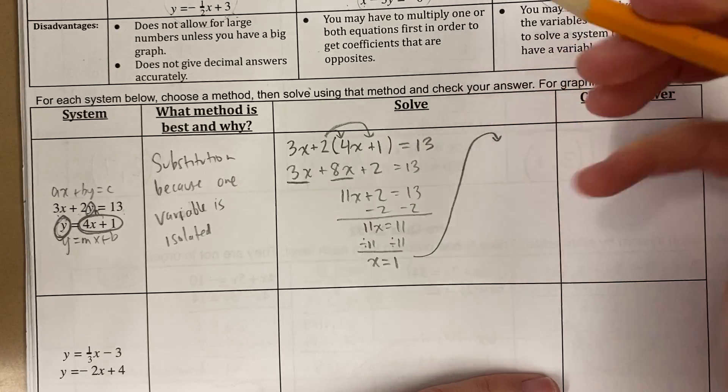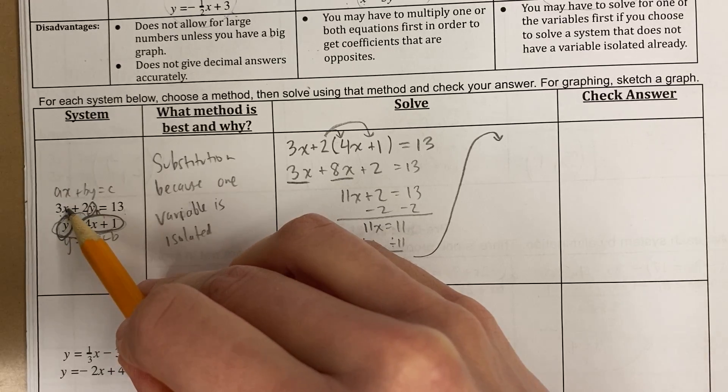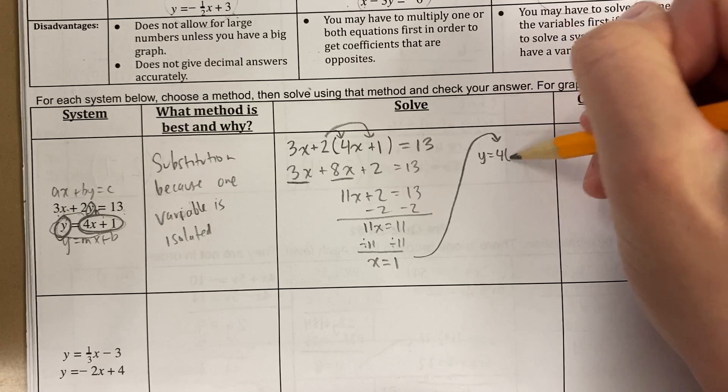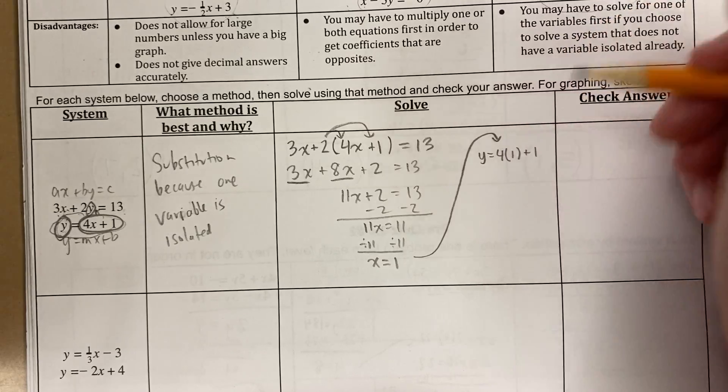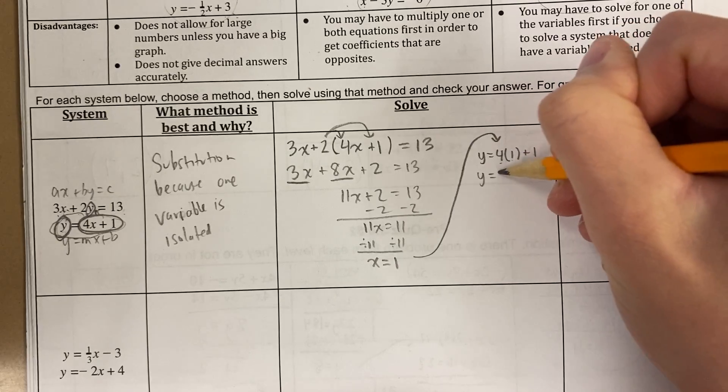Let's go ahead and solve for y. This is the easier equation to plug in. You could plug x in this equation, you get the same thing. This one would be a little shorter. This is 4 times x plus 1. 4 times 1 is 4 plus 1 is 5.